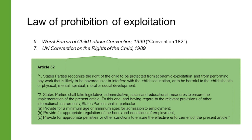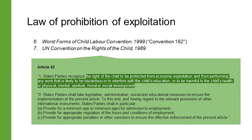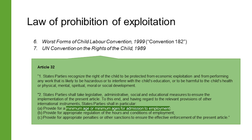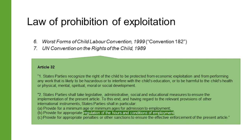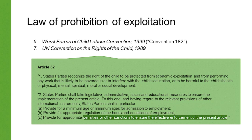Article 32 of the Convention directly relates to child labour. It recognizes the rights of children to be protected from economic exploitation and from performing any work that is likely to be hazardous, or to interfere with the child's education, or to be harmful to the child's health, or physical, mental, spiritual, moral, or social development. Specifically, it places obligations on state parties to provide for a minimum age for admission to employment, appropriate regulation of the hours and conditions of their employment, and appropriate penalties or other sanctions to ensure the effective enforcement of the minimum age and working hours regulations.